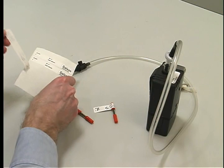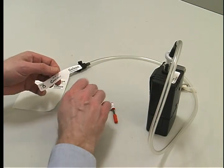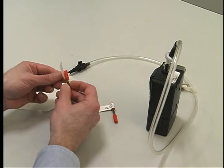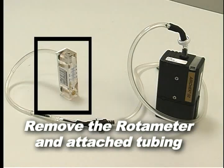Remove the sorbent tubes, cap their ends, and mark them as front and back for use in the post calibration you will be performing after testing is completed. Remove the rotometer and attached tubing.